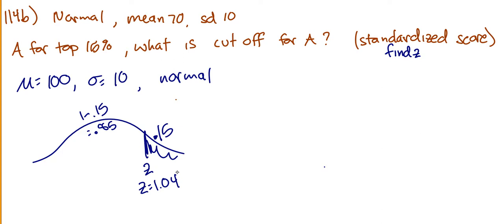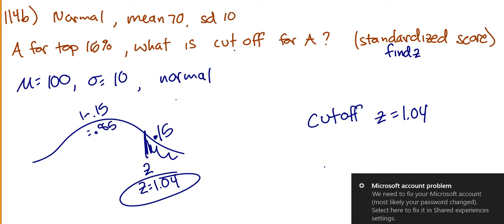So Z is our cutoff. So if any students have a Z score higher than 1.04, they'll get an A in the class. So again, for all of you our students, you already found all of their Z scores. So if anyone has a Z score higher than 1.04, then they will get an A in the class.